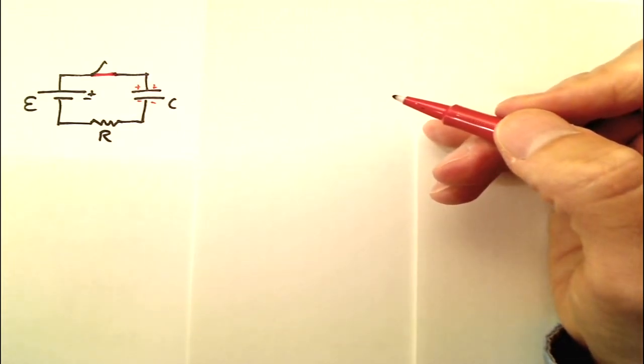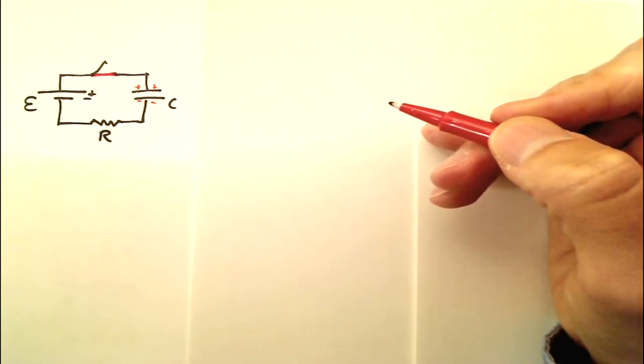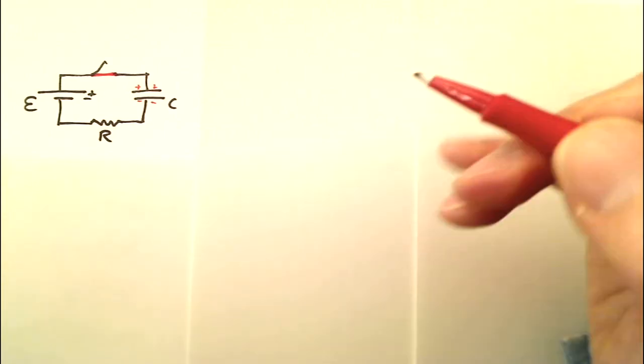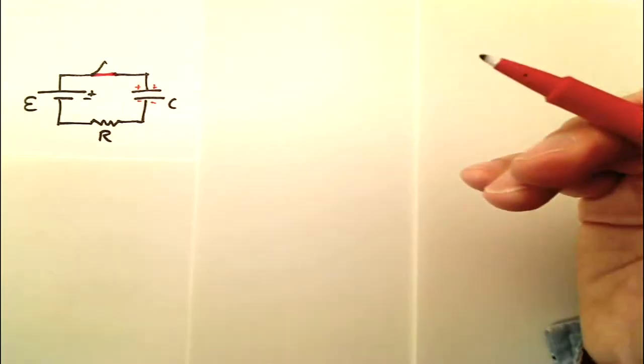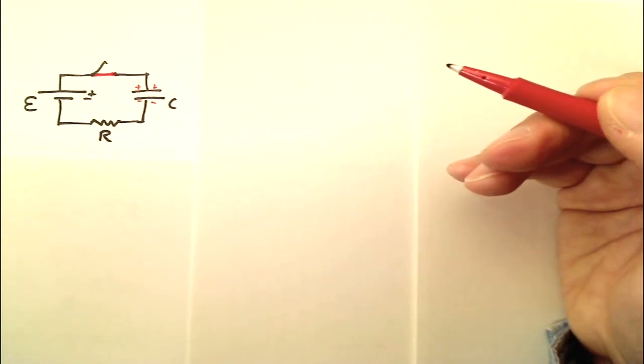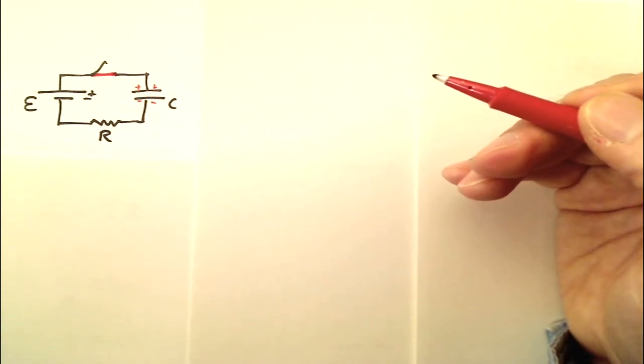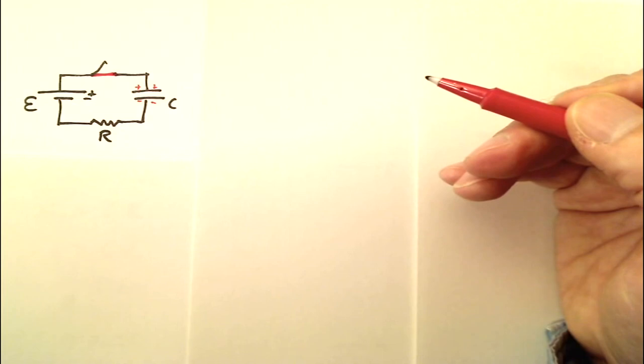What I'm going to do is show you a method that you can use to deduce all of the formulas that describe the current and the voltage. And all you need is to have a clear understanding of what's going on, and you need to remember a few key math expressions.